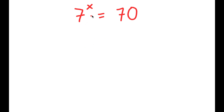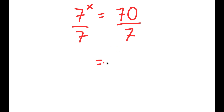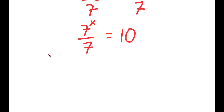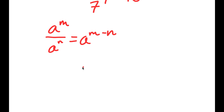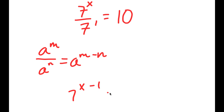In this problem, I have 7 to the power of x is equal to 70. To solve this, I'm going to first divide both sides by 7. So 70 divided by 7 is 10, and I have 7 to the power of x over 7 is equal to 10. Using the rule a to the power of m over a to the power of n equals a to the power of m minus n, since 7 is 7 to the power of 1, I get 7 to the power of x minus 1 is equal to 10.